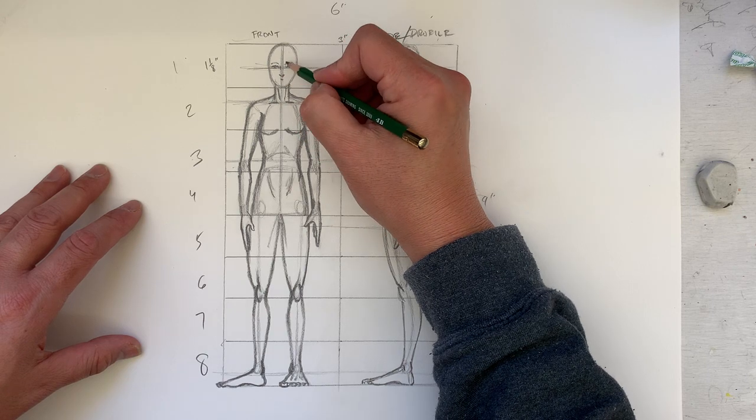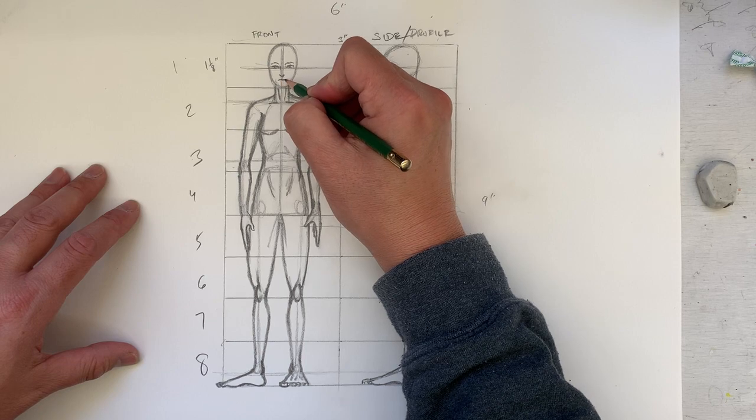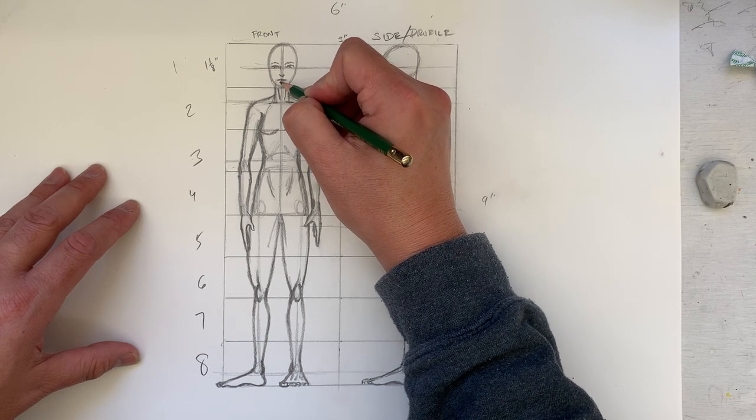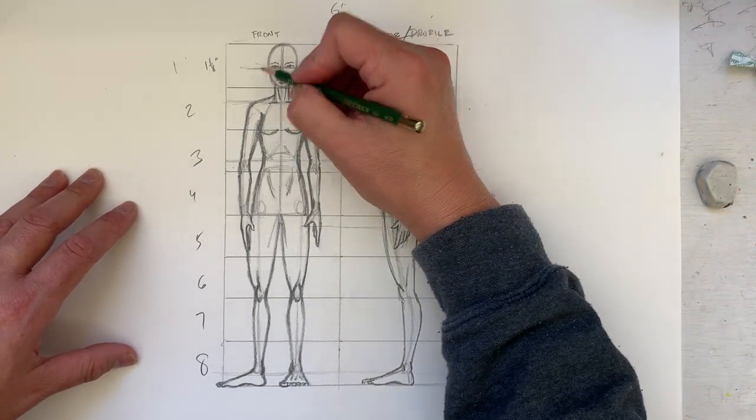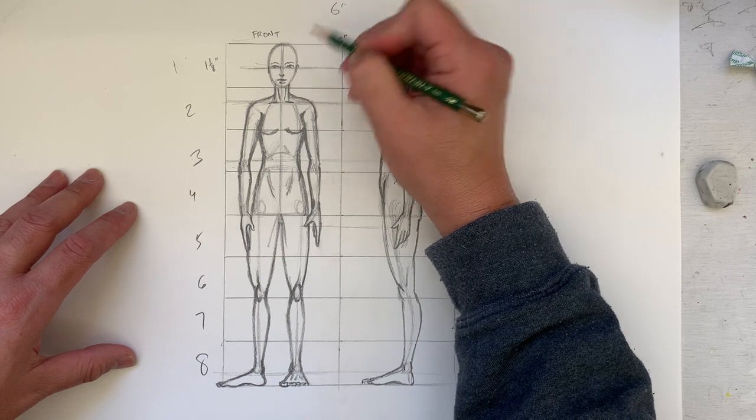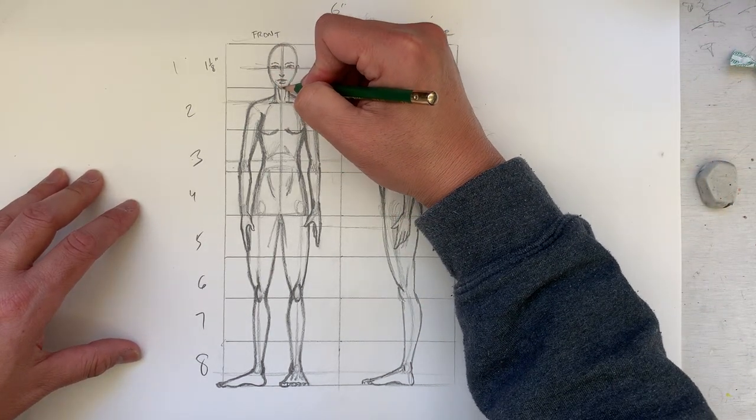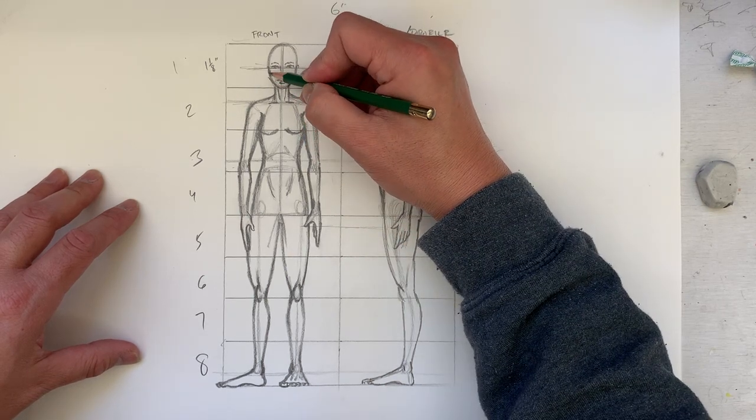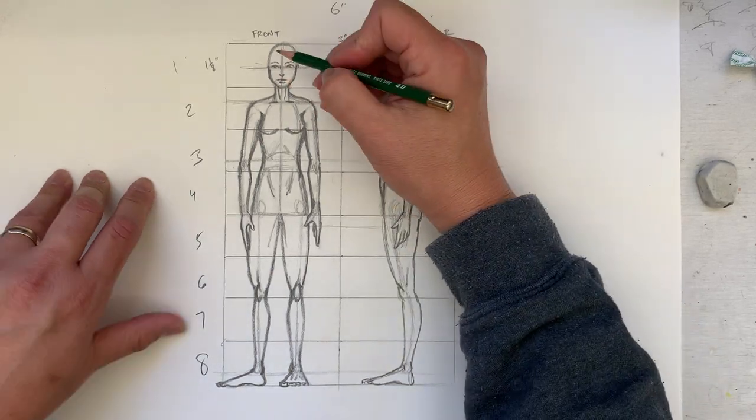Eyes are one width of an eye apart, meaning that the distance between these two eyes is the width of one eye. I'm going to do just a really quick job adding some facial features here. Just hints. Nose, nose bridge, eyebrows, lips. Simple. Give her more of a defined chin and jawline. Again, that shape is just a placeholder.